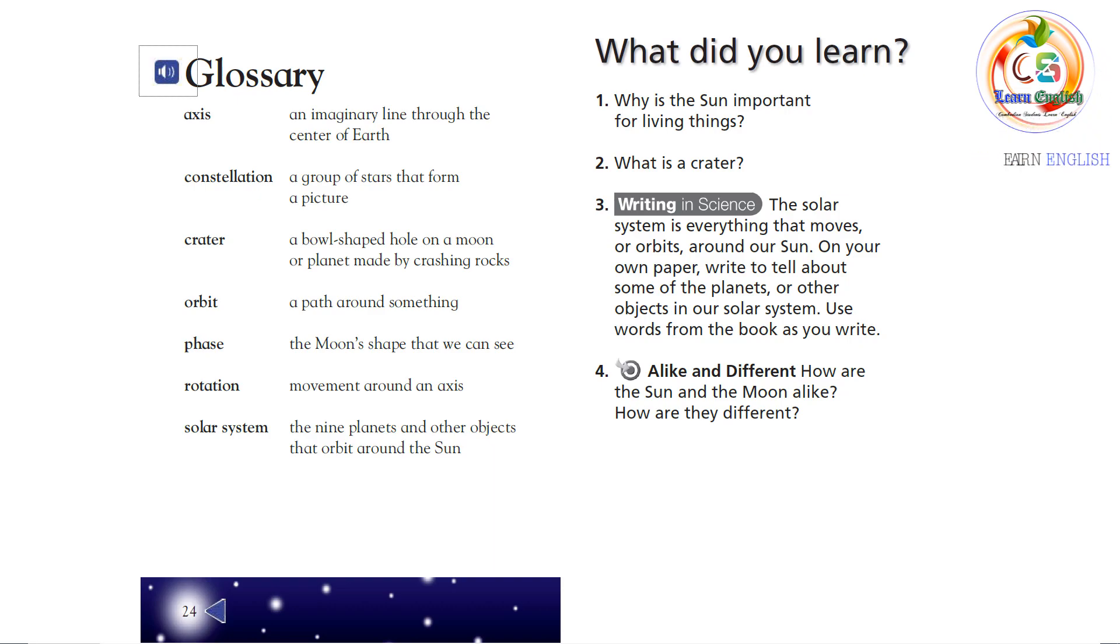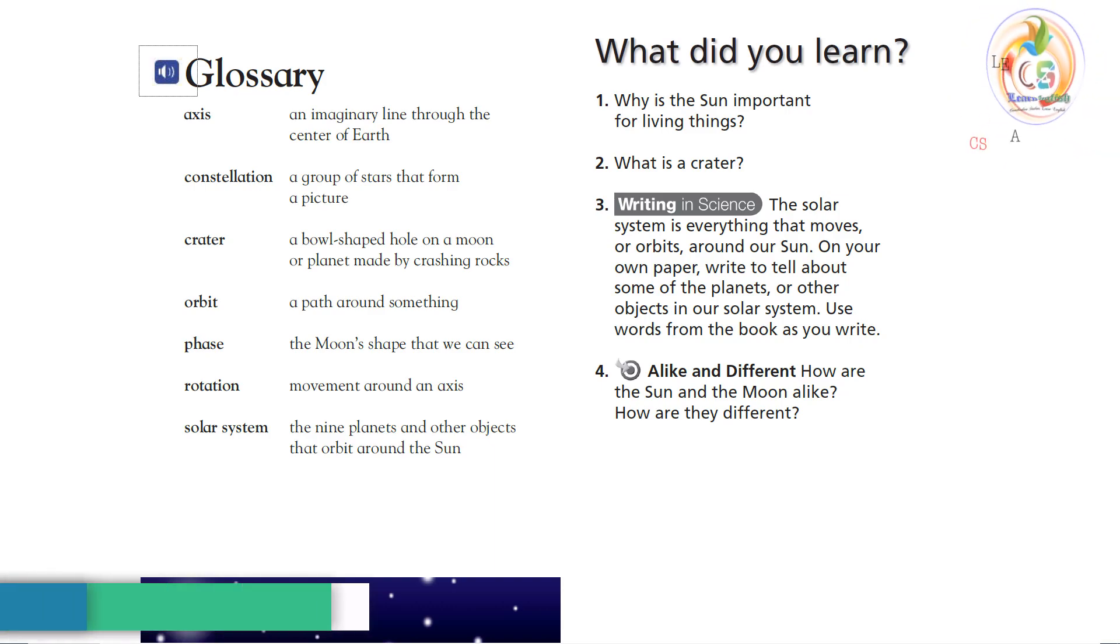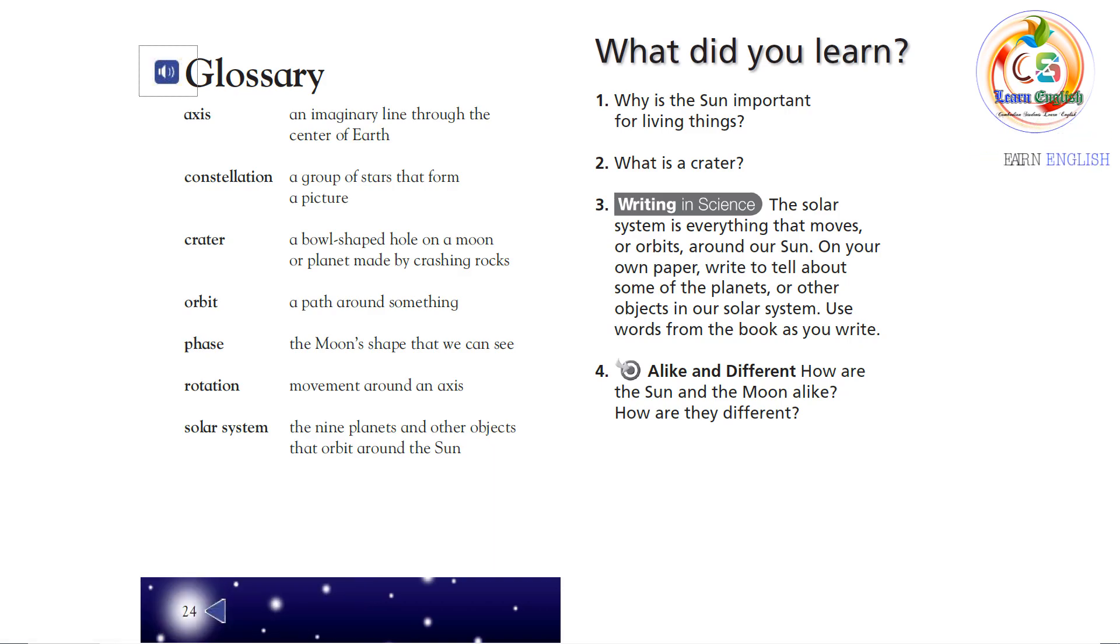Glossary. Axis: an imaginary line through the center of Earth. Constellation: a group of stars that form a picture. Crater: a bowl-shaped hole on a moon or planet made by crashing rocks. Orbit: a path around something. Phase: the Moon's shape that we can see. Rotation: movement around an axis. Solar system: the nine planets and other objects that orbit around the Sun.